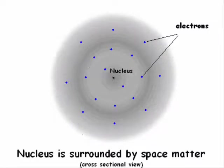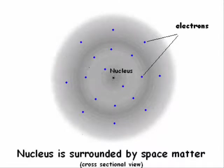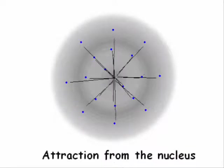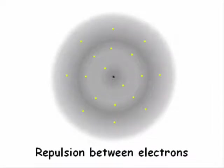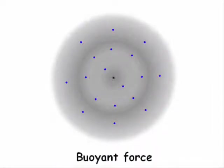This elastic matter surrounding the nucleus I name as space matter. So there are three factors that determine the electron configuration in a multi-electron atom: A, attraction from the nucleus; B, repulsion between electrons; and C, buoyant force exerted by space matter.